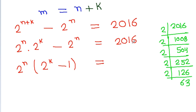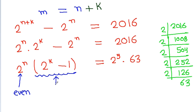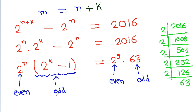So 2016 can be written as 2 to the power 5 times 63. The reason we write it this way is that 2 to the power n is even and (2 to the power k minus 1) is odd, and on the right-hand side we have 2 to the power 5 as the even part and 63 as the odd part. So we can easily compare even factor with even factor and odd factor with odd factor.